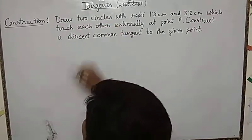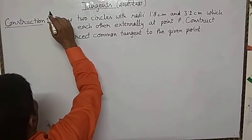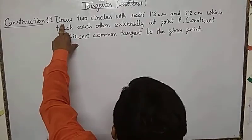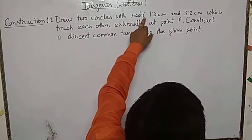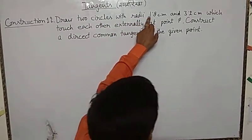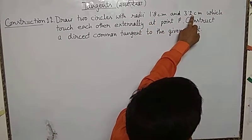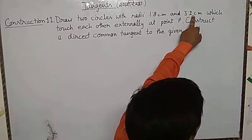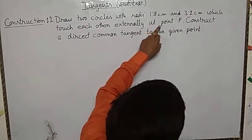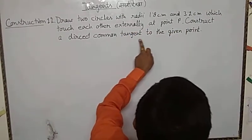In lesson 2, draw 2 circles with the given radii — 'ready' means the approval of radius. This is 1.8 cm and 3.2 cm, which touches each other externally at point P. We will be constructing a direct common tangent to the given point.